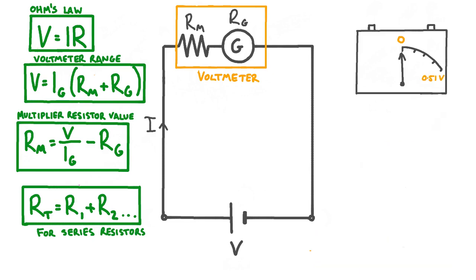So once we've chosen the value of our multiplier resistor, connected it in series with a galvanometer, and calibrated the scale, our voltmeter is ready to be used. Of course, measuring the voltage of a cell isn't the only application for a voltmeter.